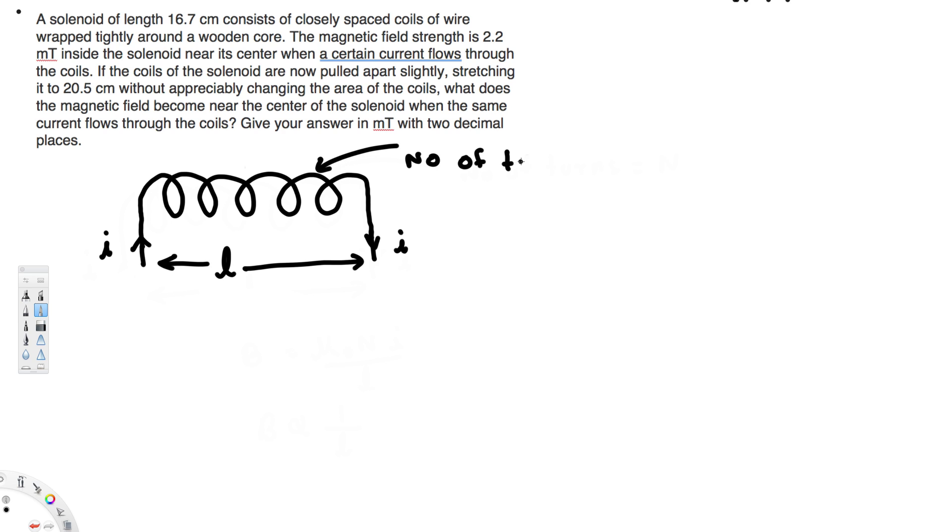And in order to solve this problem, we have to know the ideal solenoid magnetic field equation. So for an ideal solenoid, the magnetic field inside the solenoid is given by B equals μ₀Ni over L.